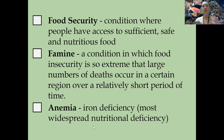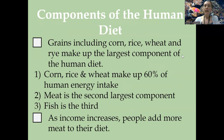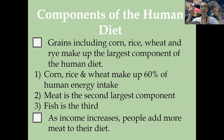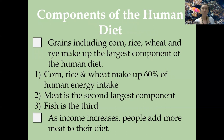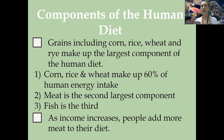When thinking about the components of the human diet globally, if the whole world shared one plate, 60% of humans would be eating mostly corn, rice, and wheat — mostly grains. Meat is the second largest component, but it doesn't quite reach that 60% level. These are simple, cheaply produced crops we can make a lot with — think about wheat: you can make bread, pasta, all kinds of carbs. Meat is the second largest component and fish is the third.